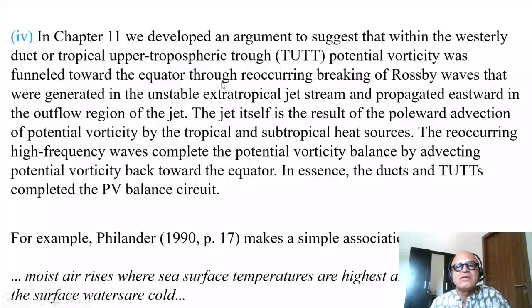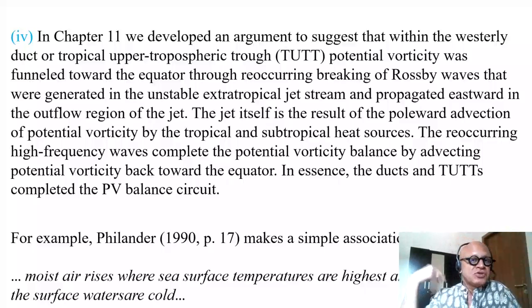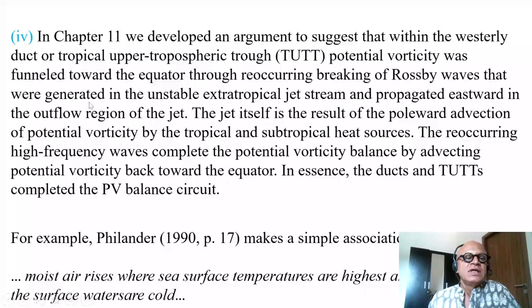In chapter 11, we developed an argument suggesting that within the westerly duct — the tropical tropospheric trough — potential vorticity was funneled towards the equator through recurring breaking Rossby waves at the exit of the jet. These instabilities and breaking Rossby waves feed into the baroclinic instability generated in the unstable extratropical jet stream and propagated eastward in the outflow region of the jet.